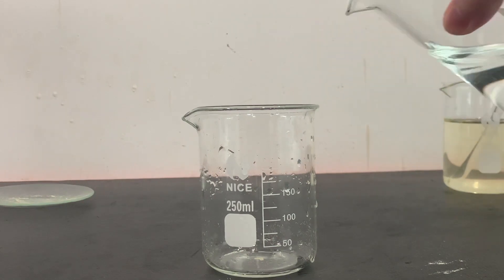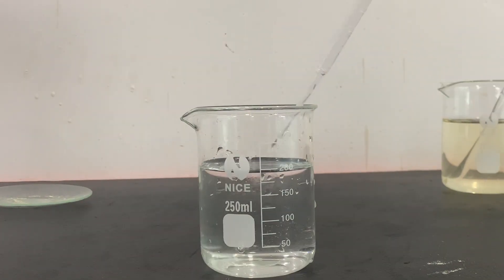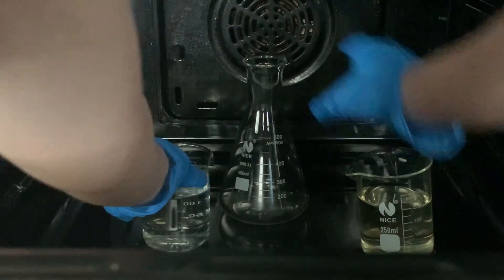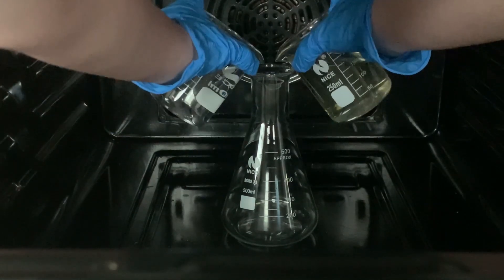To another beaker, I poured in 200 milliliters of water and added 2 milliliters of household bleach to it. We then have to mix both solutions together and we will be greeted by a blue glow from the luminol being excited.